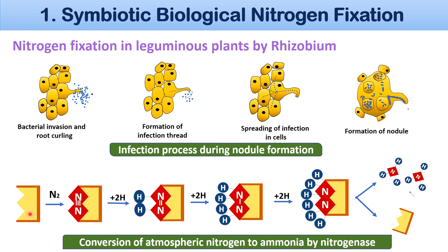Now let's see how nitrogenase works. The nitrogenase enzyme binds with the nitrogen molecule, and three molecules of hydrogen bind with nitrogen, resulting in the formation of ammonia and later an ammonium ion, which is utilized by the plant.